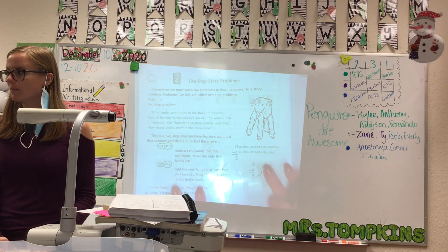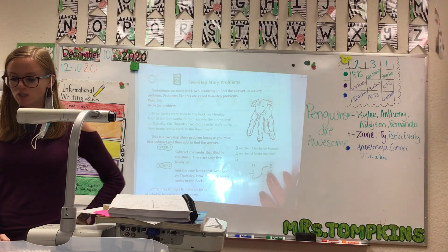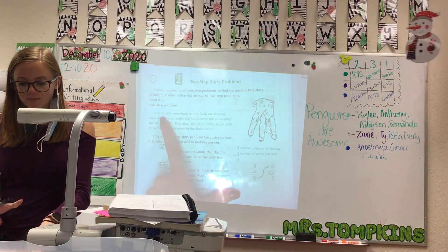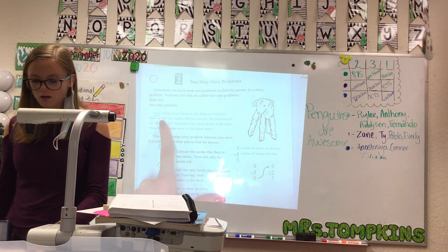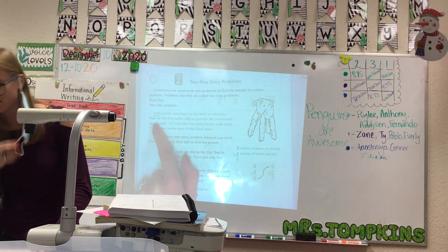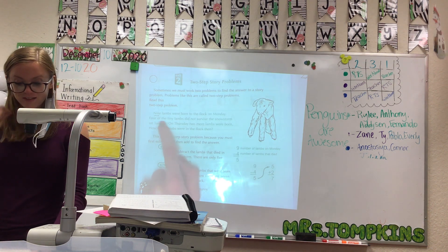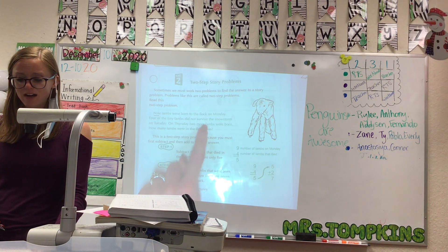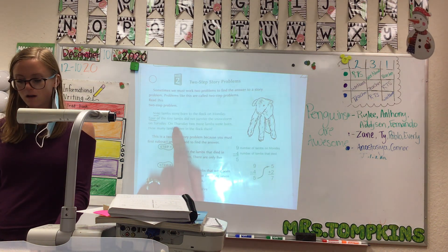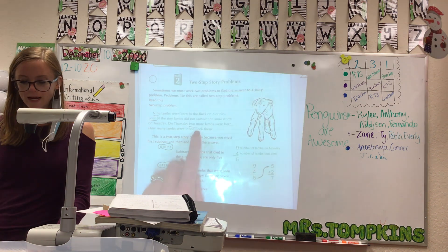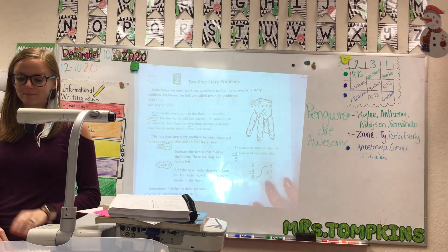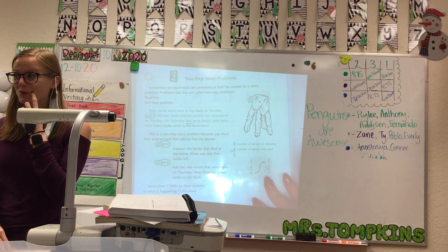Read this two-step problem. All right, listen — there are going to be two things we have to do. Nine lambs were born to the flock on Monday. Four of the tiny lambs did not survive the snowstorm on Tuesday. On Thursday, two more lambs were born. How many lambs were there in the flock? So, that one has three numbers in it.